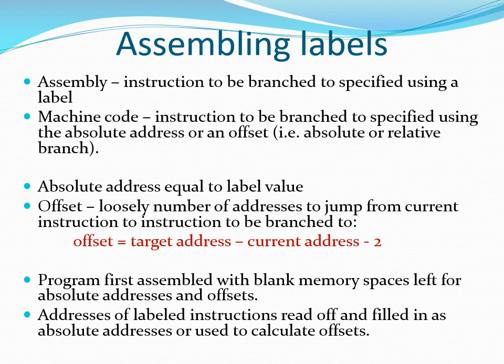The offset value is represented in 2's complement format. If you are branching to lower addresses, the value is negative. If you are branching to higher addresses, the offset is positive. To get absolute and offset values, we first assemble the program with blank memory spaces left for the absolute and offset values. After assembly, we can read off the addressing values represented by the labels, then fill them in as absolute addresses or use them to calculate and fill in offsets as needed.